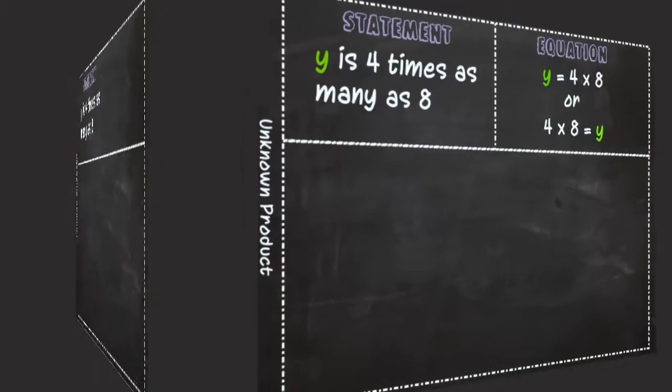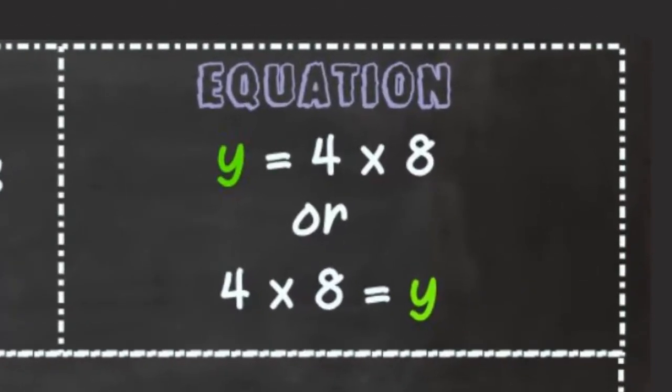The first step is writing the equation. y equals 4 times 8, or 4 times 8 equals y.